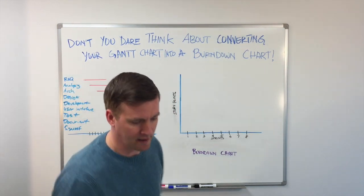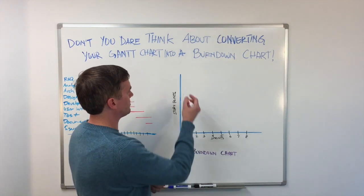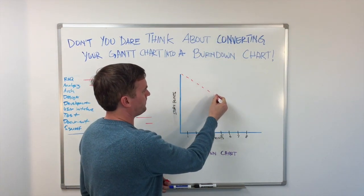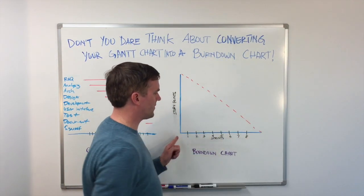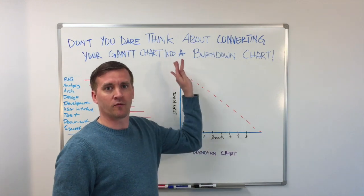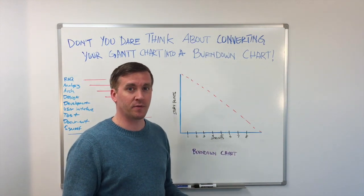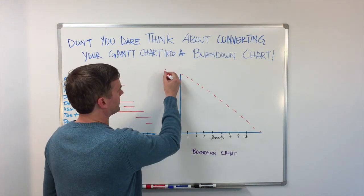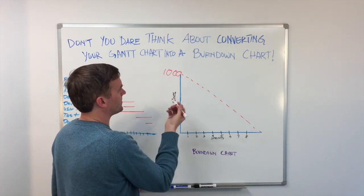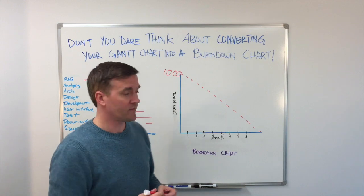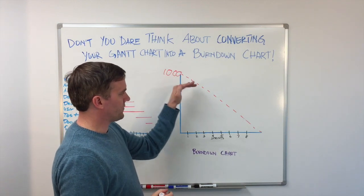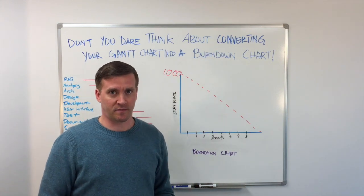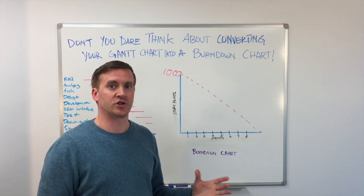Now over here we have a burndown chart. The way burndown charts work is over a certain amount of sprints, we have a certain amount of work that we would like to have finished. Typically that amount of work is measured in units of story points, but it's not completely uncommon to use hours. The difference is, sprint over sprint, you're going to complete a certain amount of work that is going to be at a potentially shippable state.